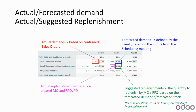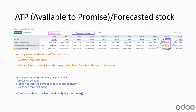The suggested replenishment is the MPS calculation telling you how many manufacturing orders to generate or whether to generate an RFQ, based on the forecast demand, the forecast stock, and for components also the combination of direct and indirect forecast demand. Next to that, actual replenishments are the manufacturing orders, RFQs, or purchase orders already created in the system.